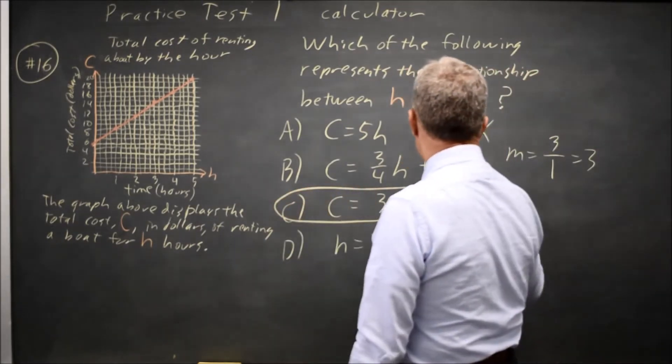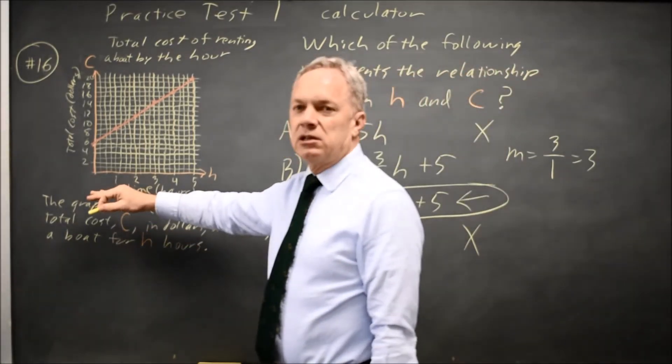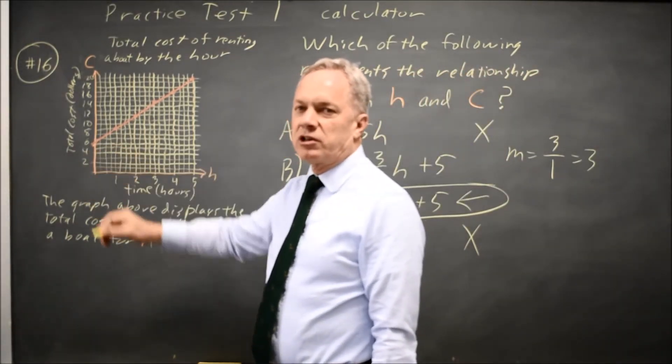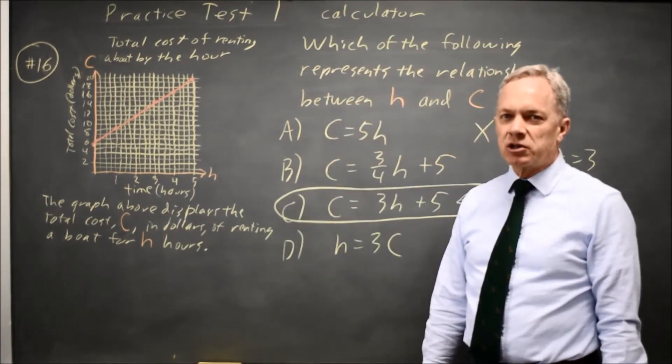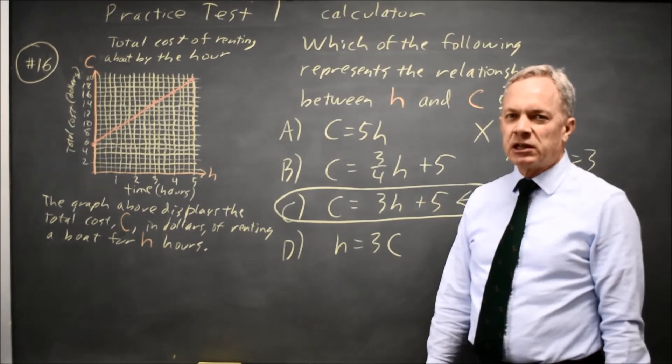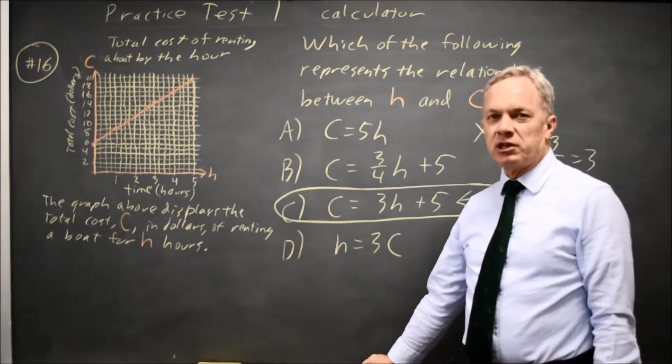The correct answer is B. Always read the scales on your horizontal and vertical axes, both on the SAT and in the real world. Those often do not match, and it's important to label them and read them carefully.